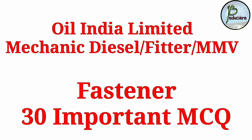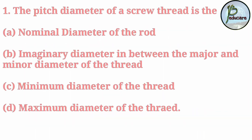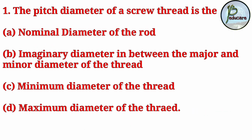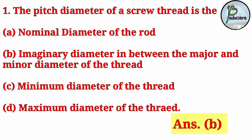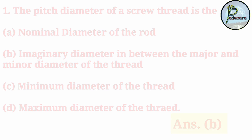The question is: the pitch diameter of a screw thread — what is it? The correct answer is option B: the imaginary diameter in between the major and minor diameter of the thread.